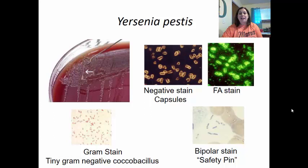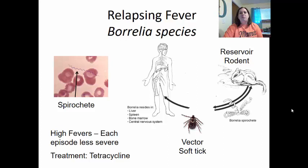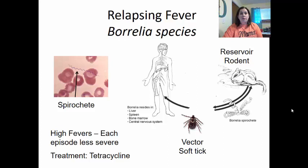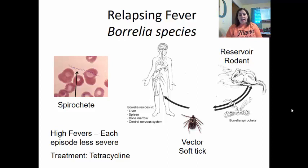Relapsing fever is caused by Borrelia species, which is a spirochete — a spiral-shaped bacterium. The reservoir is rodents and it is carried by a soft tick. Borrelia likes to reside in the liver, spleen, bone marrow, and central nervous system in humans. It creates high fevers, and each episode is less severe than the previous. Treatment is tetracycline. It's called relapsing fever because the fever comes back, though each recurrence is less severe. Cases surge in summer months due to increased activity of the reservoir and humans being outdoors.